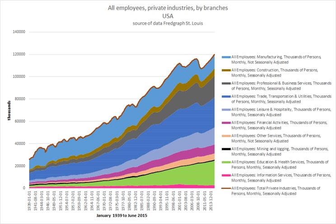Various youth subcultures have been associated with not working, such as the hippie subculture in the 1960s and 1970s, which endorsed the idea of dropping out of society, and the punk subculture, in which some members live in anarchist squats.